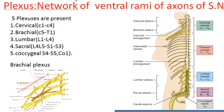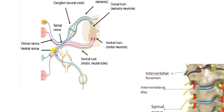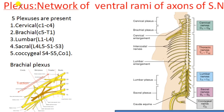Some of the spinal nerves form a plexus, which is a network. The ventral rami of some spinal nerves unite to form a network-like structure known as a plexus. It is important to remember that only the ventral ramus — not the dorsal ramus — is involved in forming a plexus.